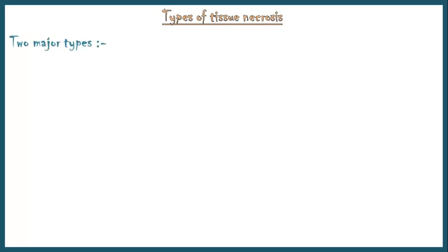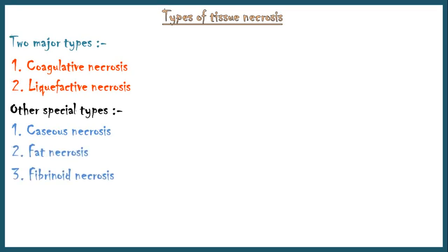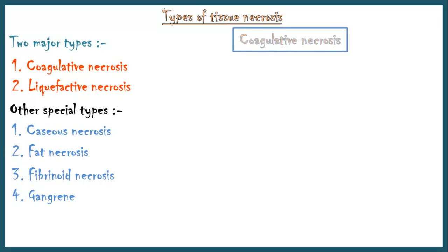Now let's discuss the different types of tissue necrosis. There are two major types: coagulative necrosis and liquefactive necrosis. In addition, there are other special types: caseous necrosis, fat necrosis, fibrinoid necrosis, and gangrene.